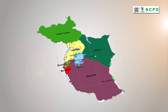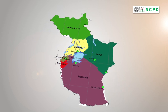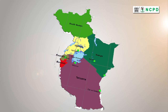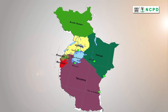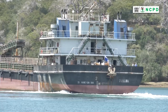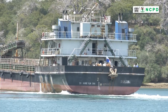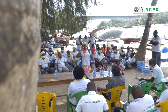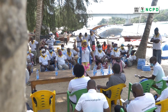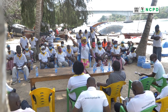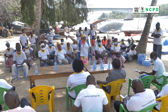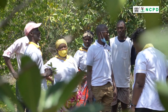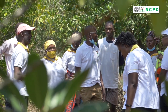The East Africa Community, which comprises Kenya, Uganda, Tanzania, Rwanda, Burundi, and South Sudan, set up the Lake Victoria Basin Commission — LVBC — with the mandate of implementing programmes and projects that would ensure the sustainable management of natural resources in the Lake Victoria Basin.